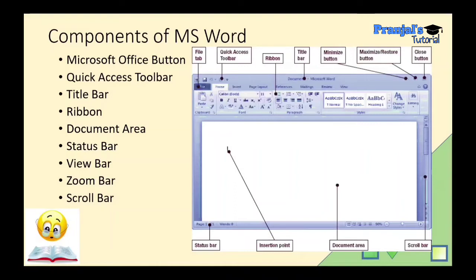We will start Microsoft Word and look at the User Interface. There are different components. First, we have the Microsoft Office button. In the 2007 version, there was a Microsoft Office button, but in newer versions the Office button is replaced — it is now on the File tab in the top left corner.